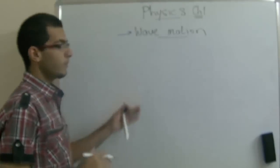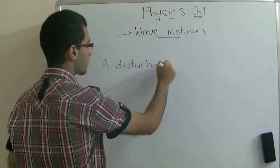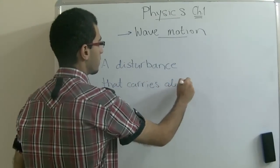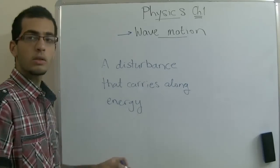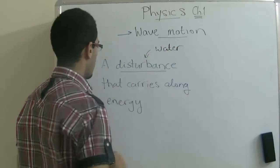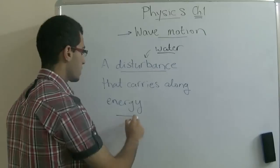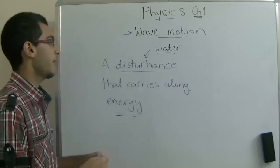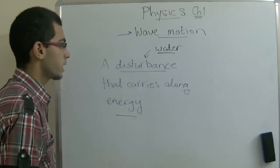From this we can define the wave as a disturbance that carries along energy. As we have just mentioned, these concentric circles which are formed are a kind of disturbance which happens to the water. It occurs inside the water and it carries energy like for example kinetic energy to let the water move. This is the definition of the wave motion - a disturbance that carries along energy.